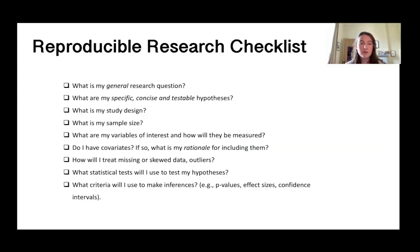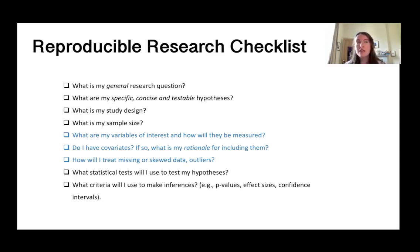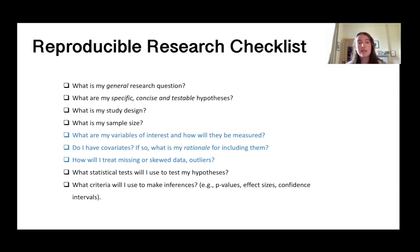Once you've given as much detail as possible on those aspects, we move on to the variables of interest and how they might be measured, what covariates you're going to use and your rationale for including them, and also what you'll do with missing data, skewed distributions, or outliers. These are all things we need to think about in advance to make our research reproducible, so that others know exactly the approach we took — but also for your future self when you get to the writing-up stage.